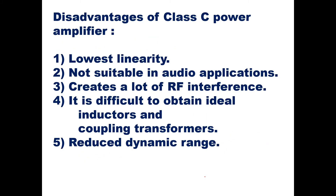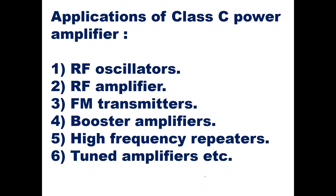The disadvantages of Class C amplifiers are: lowest linearity — meaning output does not vary proportionally with input — not suitable for audio frequency applications (20 Hz to 20 kHz), creates a lot of radio frequency interference, it is difficult to obtain ideal inductors and coupling transformers, and it has a reduced dynamic range.